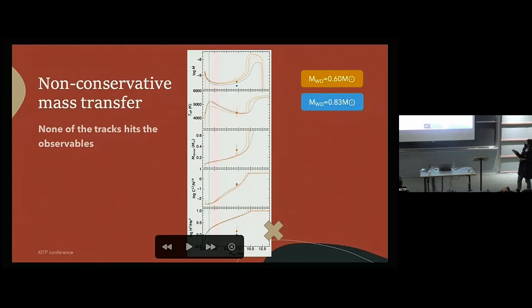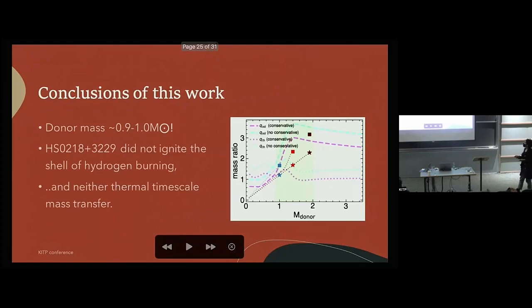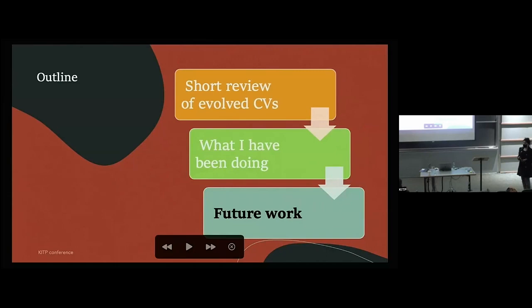All this comes with the caveat that I'm applying CV evolution theory that we have, which might not be right. Finally, the conclusions of this work are that the donor mass is not that big, and being not that big means that this system never gets to this high accretion rate to experience the super soft X-ray source phase and neither needed a thermal time scale mass transfer to evolve as it looks like now.